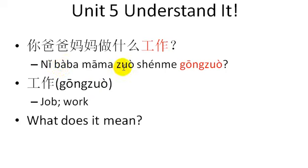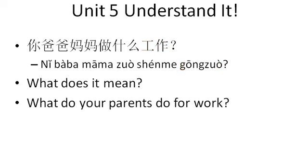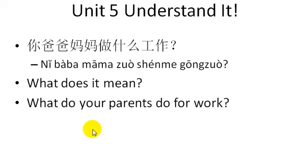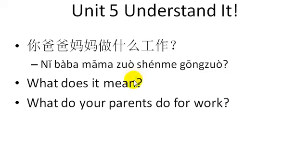What does it mean? Pause if you want to think about it. What do your parents do for work? You, father, mother, do what work? 你爸爸, 妈妈, 做什么? 工作 — what do your parents do for work? The word order is kind of different here. The way I forced my brain to accept this new word order was just to repeat these phrases over and over again until they became comfortable.